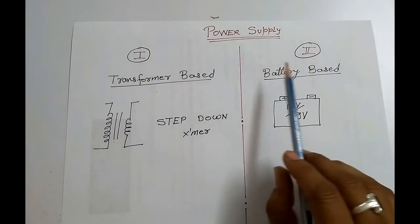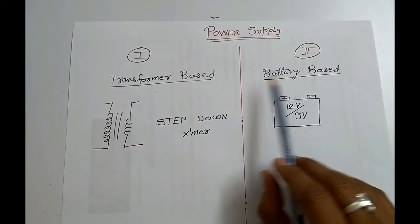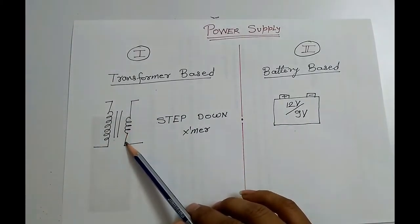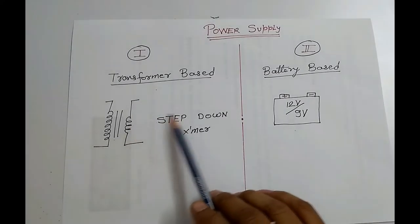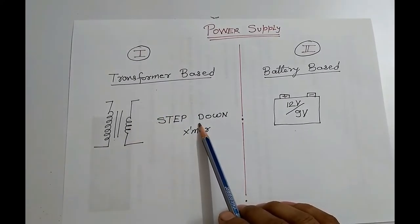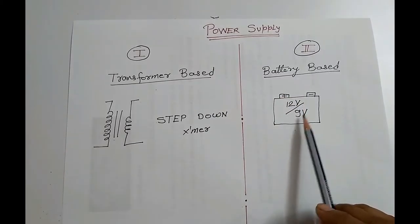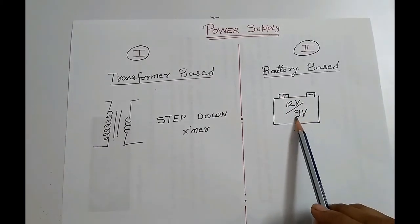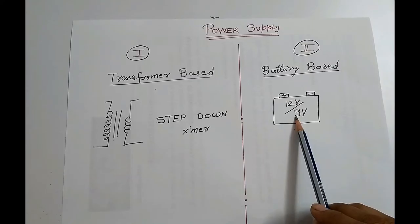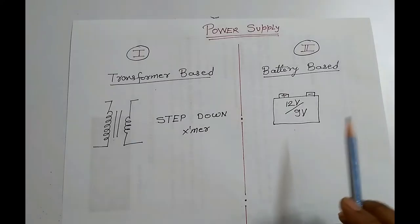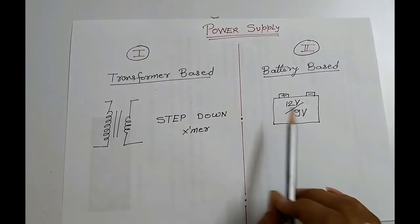Basically there are two different types of power supply. One is based on transformer. In this we use one step-down transformer. Moreover, second one is based on battery. Here we can use 9V battery or 12V till 18V rechargeable battery or fixed battery. Now I am going to explain you in brief about both circuits.